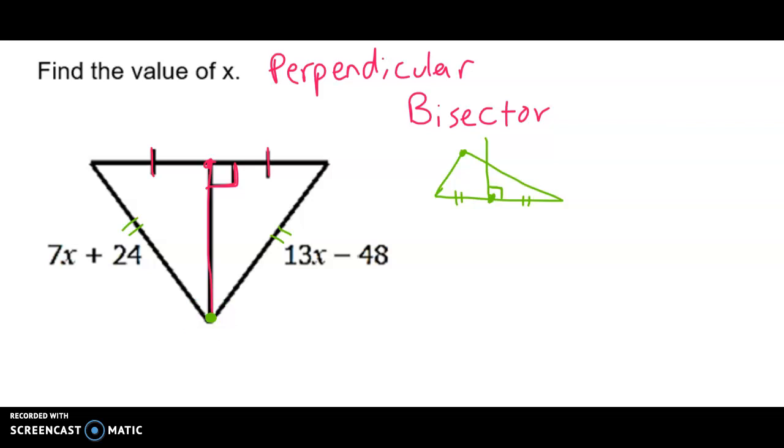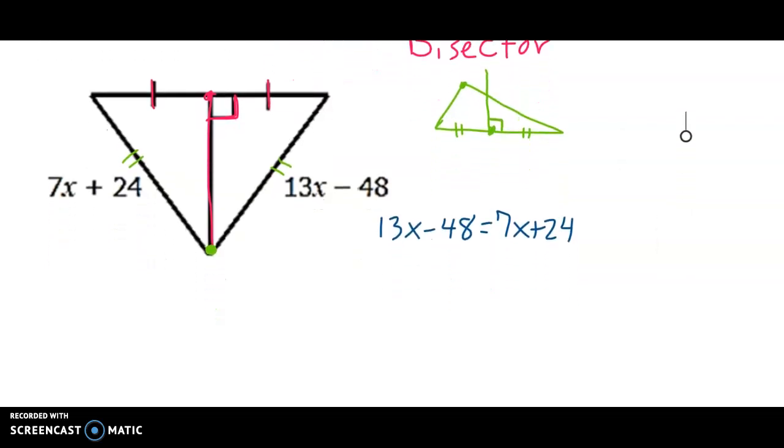So now all I have to do is actually set them equal: 13x minus 48 equals 7x plus 24. So we just need to solve that for x. Start off by subtracting 7x from both sides.